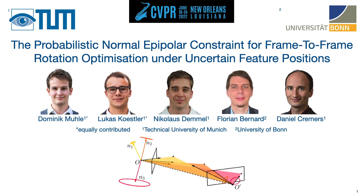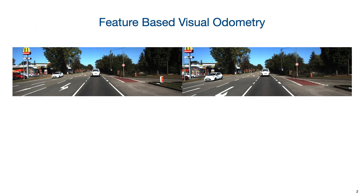Relative pose estimation is often the foundation of geometric vision algorithms like structure from motion or visual odometry. Due to its robustness against appearance changes, feature-based visual odometry is widely used. A simplified feature-based relative pose estimation can be constructed as follows.